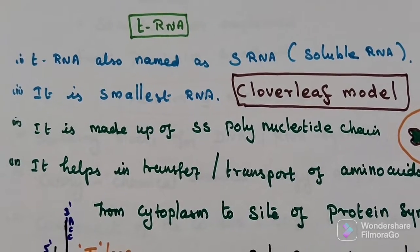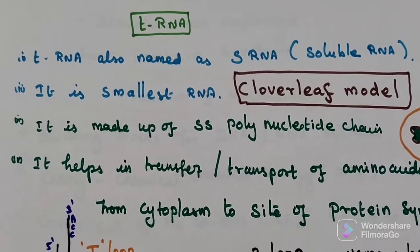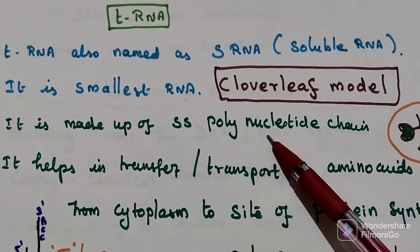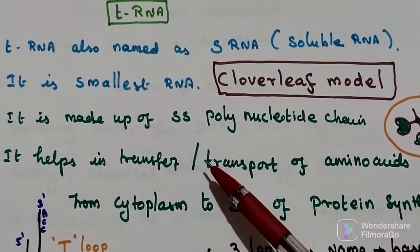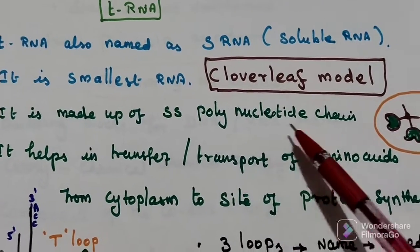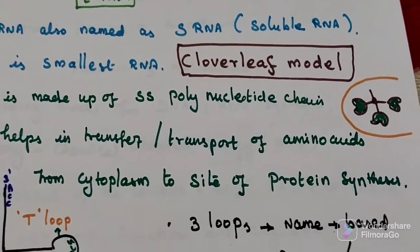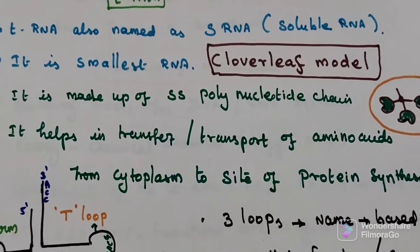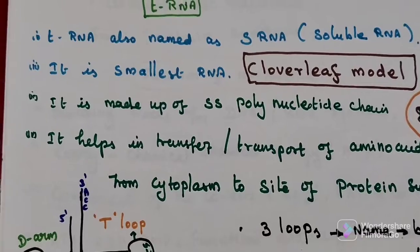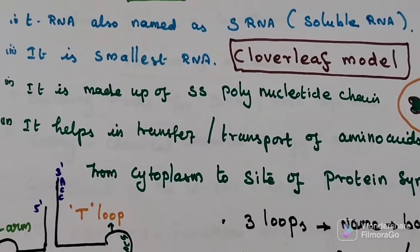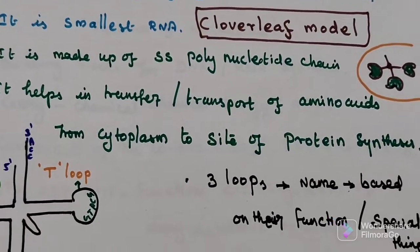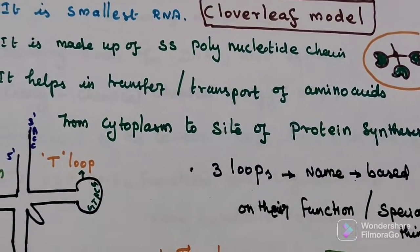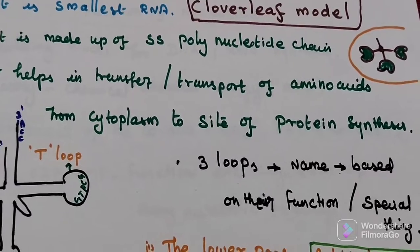Compared to mRNA and rRNA, this one is the smallest. It is made up of a single-stranded polynucleotide chain. It looks like a clover leaf. It helps in transfer or transport of amino acids from cytoplasm to the site of protein synthesis.